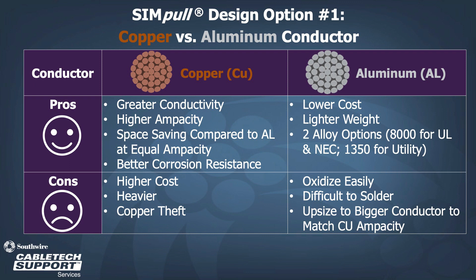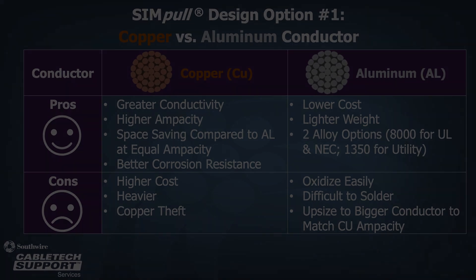For aluminum conductors, the pros are lower cost, lighter weight, and two different alloy options: 8000 series, typically used for NEC applications, and 1350 aluminum, used for utility applications. The cons are that aluminum conductors oxidize easily, are difficult to solder, and you must upsize the conductor to carry the same ampacity as copper conductors.